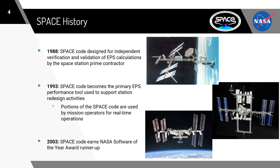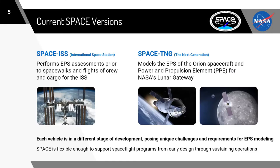SPACE was used to do trade studies on which power system designs from the initial submitted ideas would be the best one for the station. You can see in the bottom image here the design that the space station has today, and those were things that we looked at back then. After continuing work on analyzing the International Space Station, the code earned the NASA Software of the Year award runner-up. One of my most prized possessions in my office is a commemorative mug that celebrates this event that I was given as part of my initiation to the team.